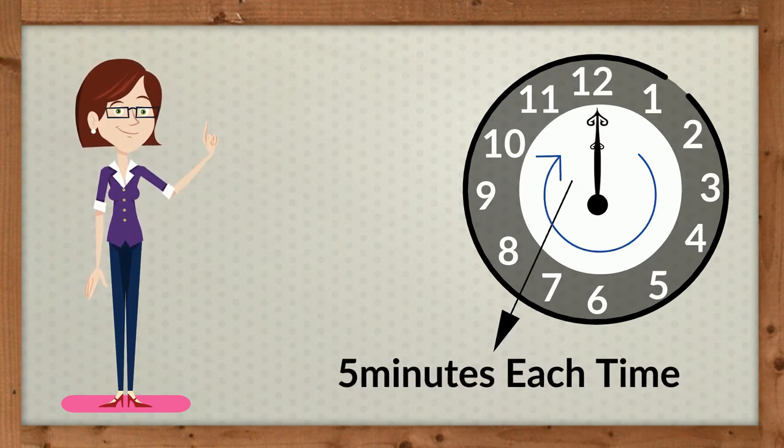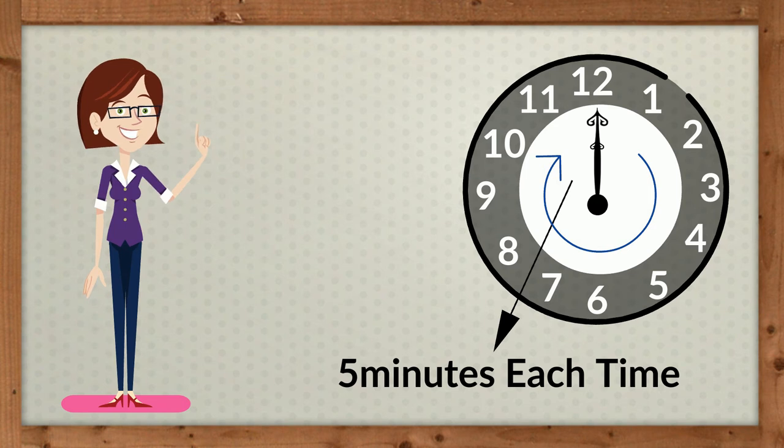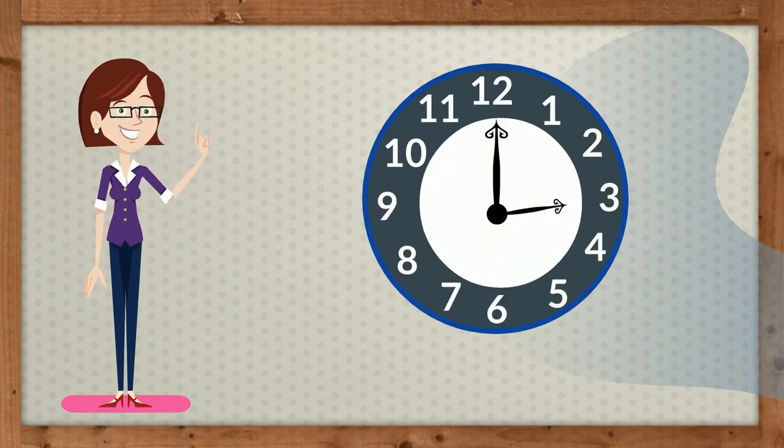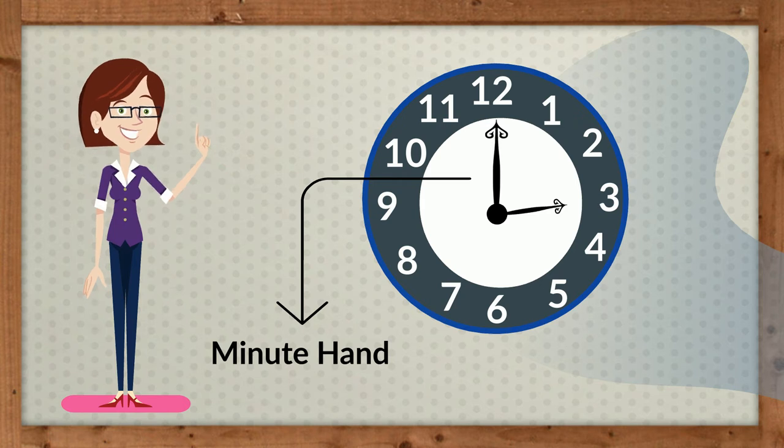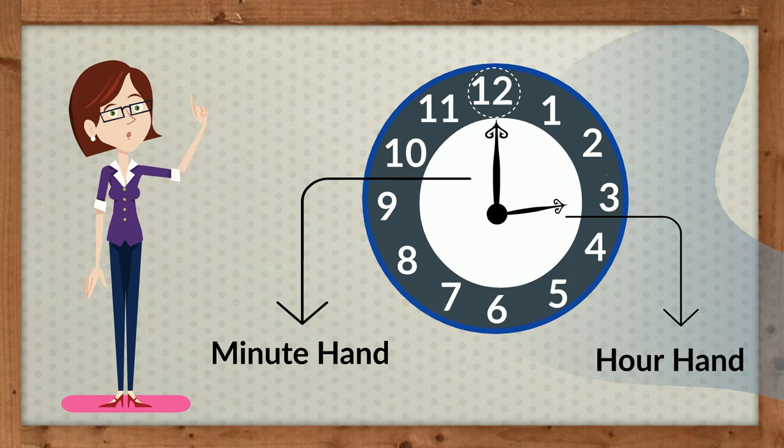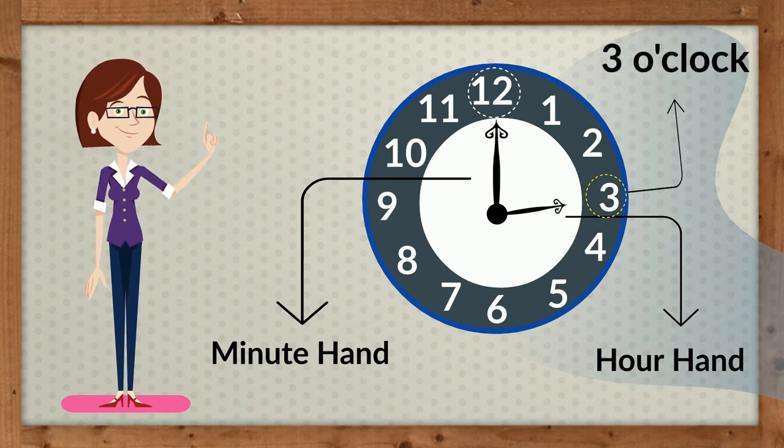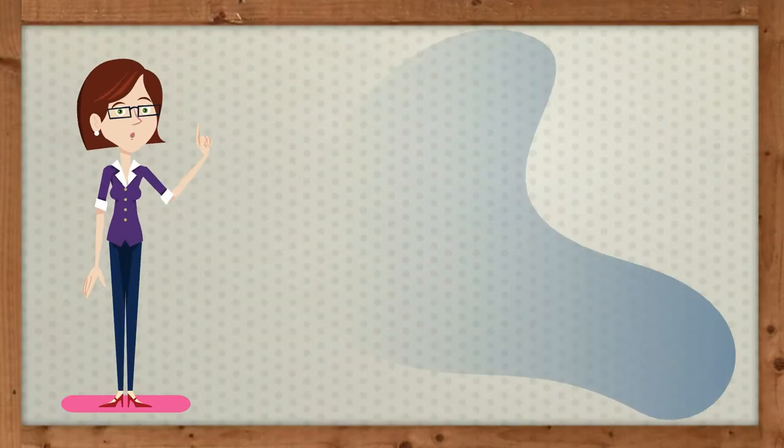For example, on this clock the minute hand is pointing towards 12 and the hour hand is pointing towards 3. Therefore, we read the time as three o'clock.